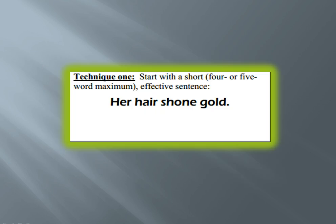Technique number one: start with a short, effective sentence — four or five words maximum. I also find it's helpful if you use a pronoun. Normally I've told you don't use pronouns without antecedents, but sometimes when it's the first sentence in your narrative, that can be effective. Because when you read a sentence like 'her hair shone gold,' you start wondering, well, who is she? Why is it important that her hair shines gold? And you want to find out more information about her. It's a very short, declarative statement.